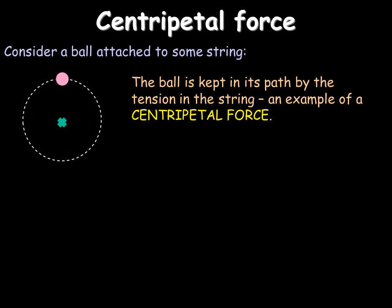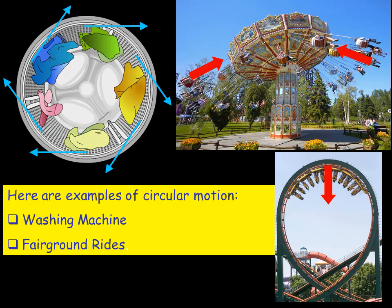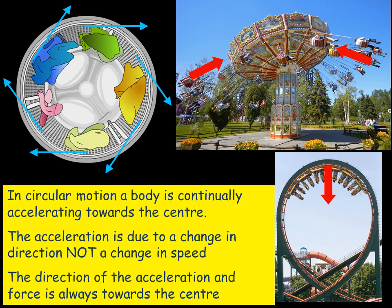The term centripetal force applies to all circular motion. For example, a ball kept in a circular path with a string — there is a centripetal force in the tension of the string which keeps it in a circular path. In other examples of circular motion, there is something pulling the bodies into the centre, which is the centripetal force.